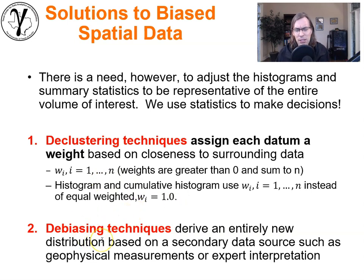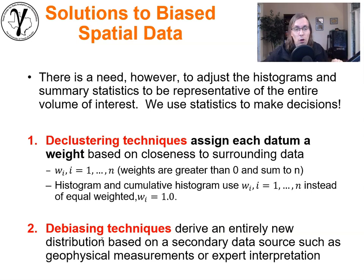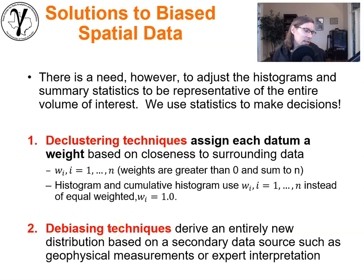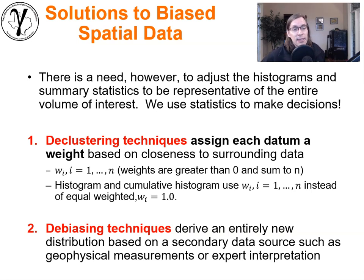The debiasing techniques are different. They address the case where you did not sample the entire distribution — you missed the worst part of the reservoir or the best part of the reservoir. You'll use some form of secondary information to fill in missing parts of the distribution. It's more complicated and definitely requires more trade craft — it's not a simple plug-and-play routine. Next, we will get into the details of declustering, and after that, a discussion around debiasing.